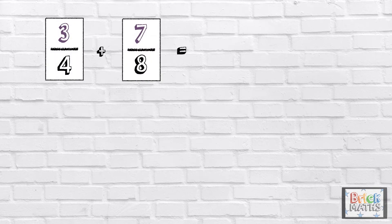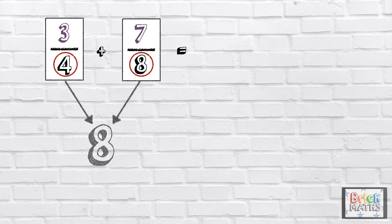Here is a calculation: 3 quarters add 7 eighths. You can only add or subtract fractions with the same denominator. If the denominators are different, we need to find a common denominator. 8 is the common denominator as it can be divided by 8 and it can be divided by 4.